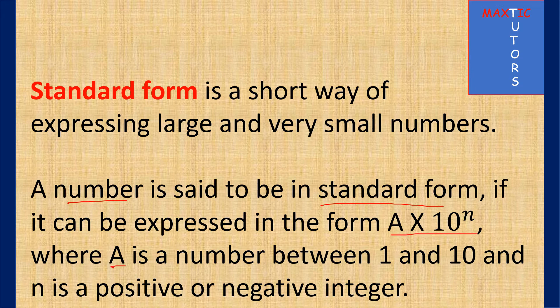A number is said to be in standard form if you can express it in the form a times 10 raised to power n, where a is a number between 1 and 10 — not 1, not 10, but a number between 1 and 10, and it can be decimal. Then n is a positive or negative integer.